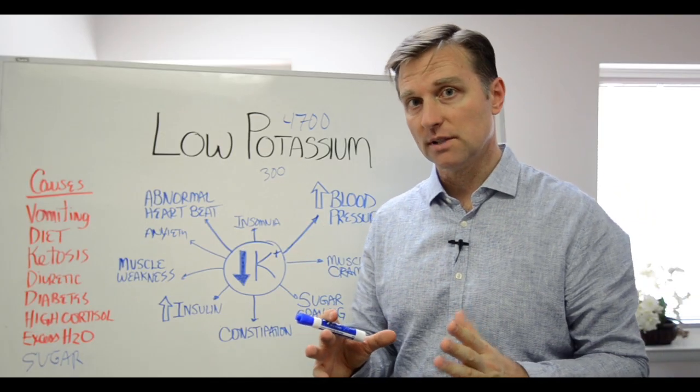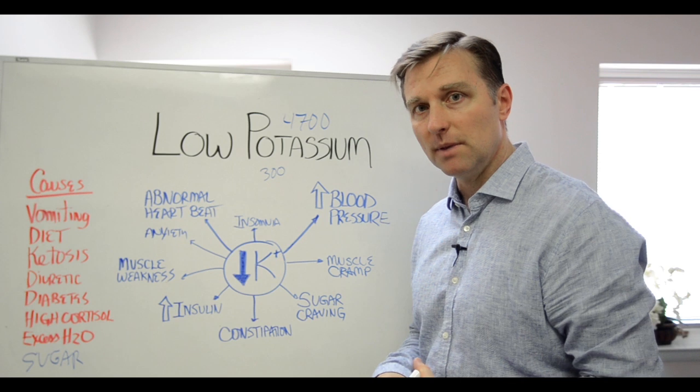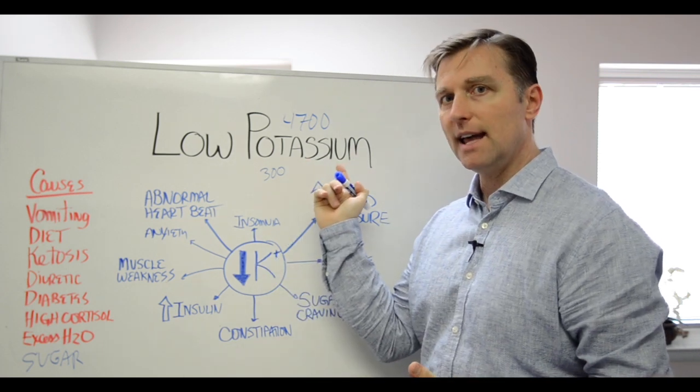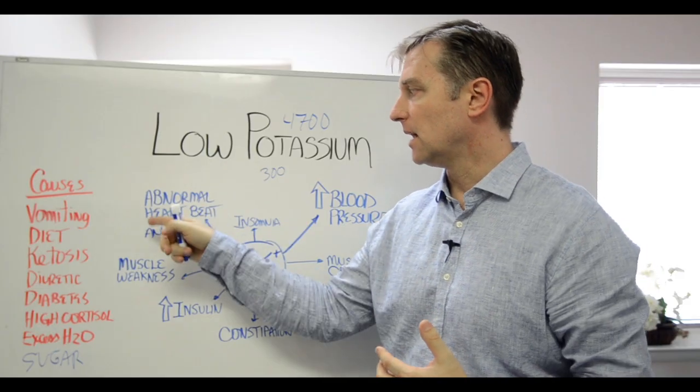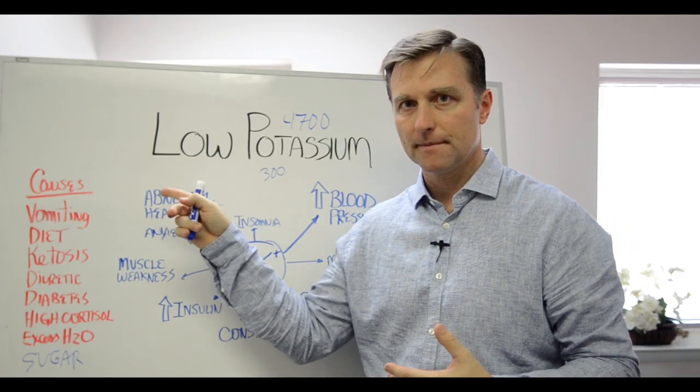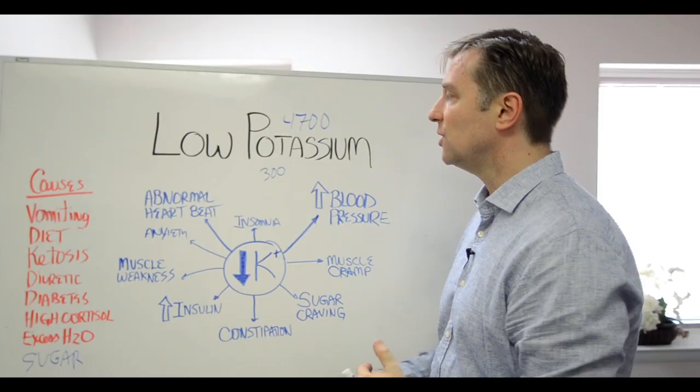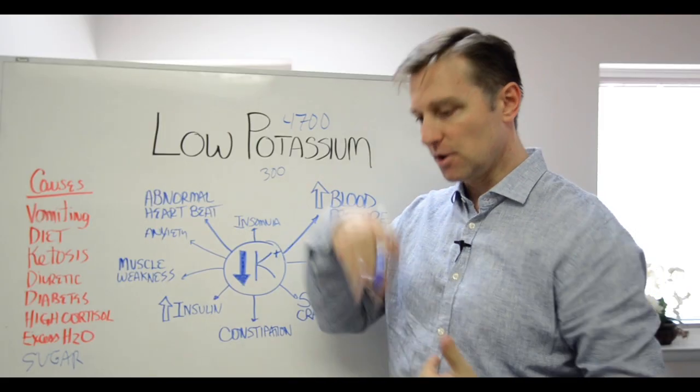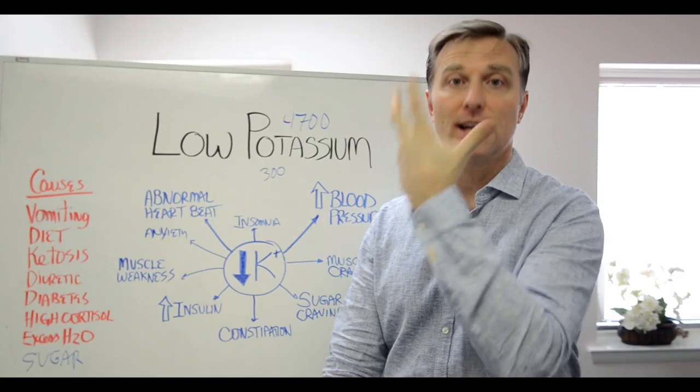When you drink too much water, you create a condition called hyponatremia, which is a dilution of all your electrolytes. And then your heart starts going out of balance and you can have a heart attack by drinking too much water. So you want to drink when you're thirsty, so you don't flush out all your electrolytes. You're drinking water but you're peeing out electrolytes, you're not putting in electrolytes.